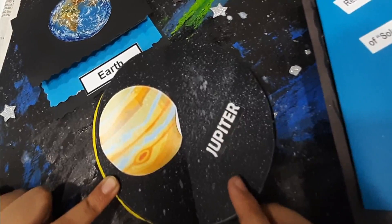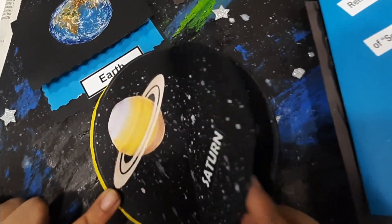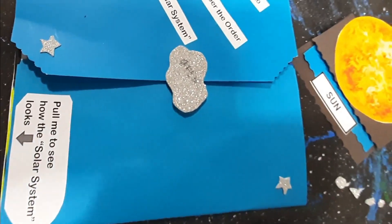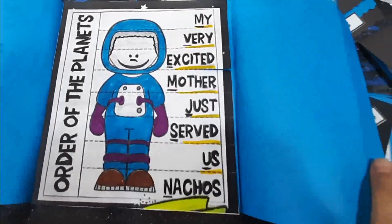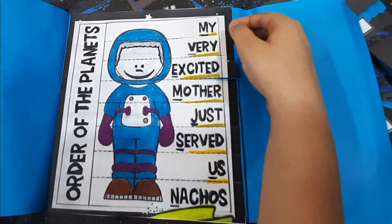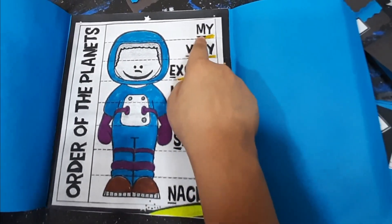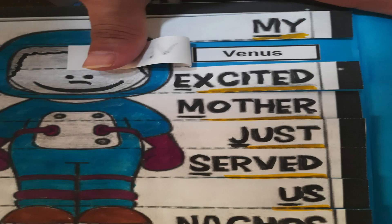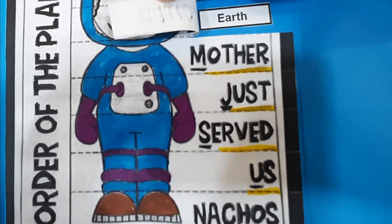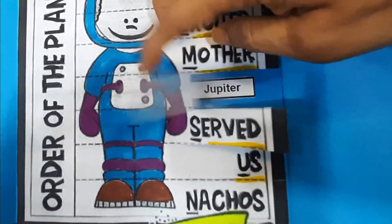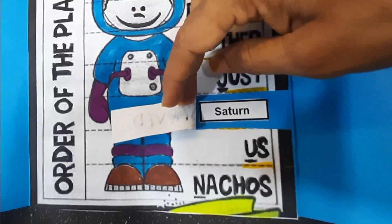Now the gas planets: Jupiter, Saturn, Uranus, Neptune. To remember the order of the planets, I have a trick. 'My Very Excited Mother Just Served Us Nachos.' The first letter of each word represents a planet — M for Mercury, V for Venus, E for Earth, M for Mars, J for Jupiter, S for Saturn.